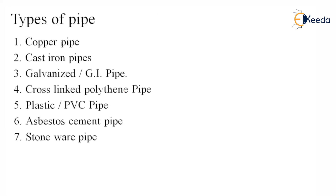Types of pipes. There are about 7 types of pipes we will be dealing with now, starting from the copper pipe to the stoneware pipe. Let's see them one by one.